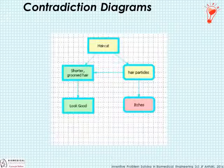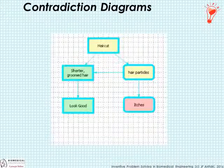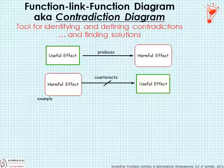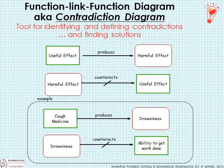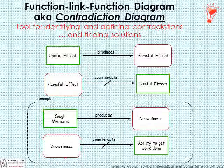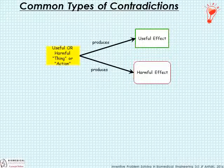Up until now we've articulated contradictions in prose. We also have a very powerful tool known as the Contradiction Diagram, also known as the Function Link Function Diagram — a tool for identifying and defining contradictions buried in a problem, and hence a tool for finding solutions. It's comprised of two basic elements — useful effects and harmful effects — and two connectors: produces or counteracts. For example: cough medicine, a good thing, produces drowsiness, a bad thing, and hence a contradiction. Drowsiness, a bad thing, counteracts the ability to get work done, a good thing.